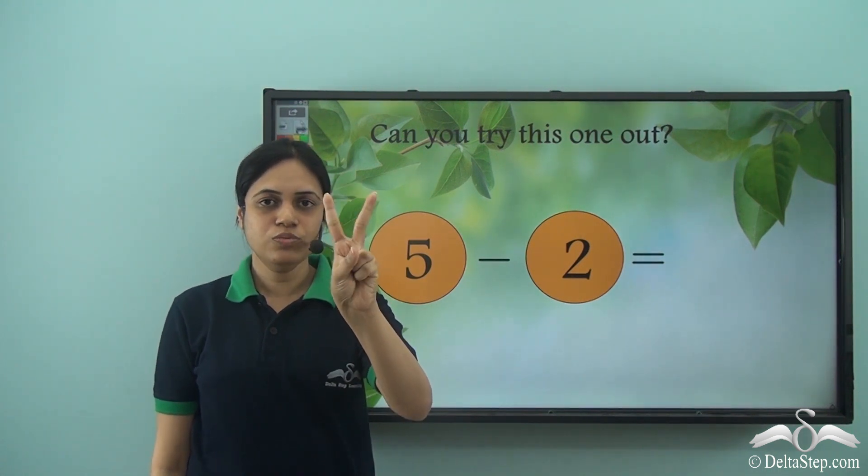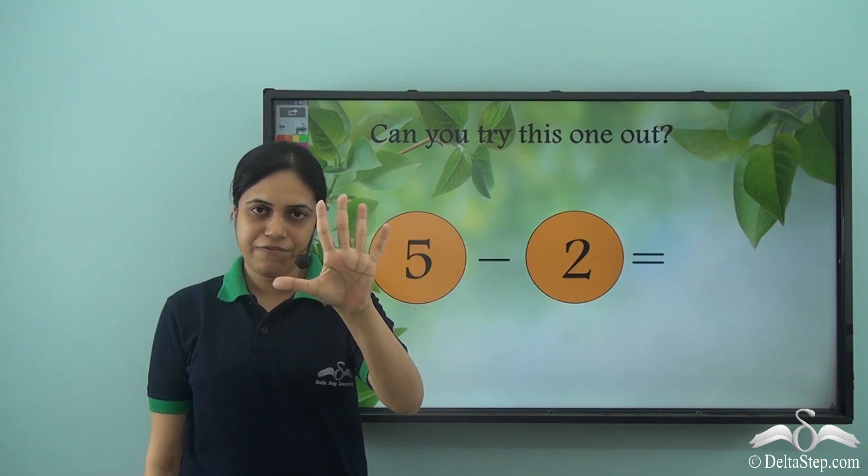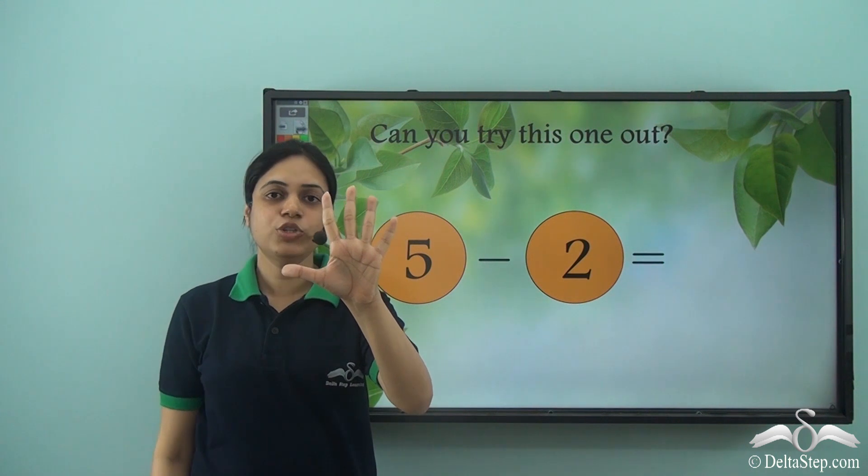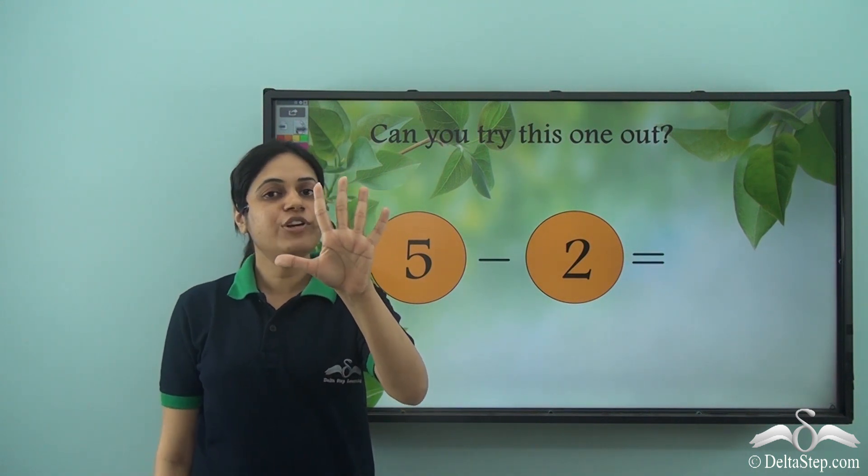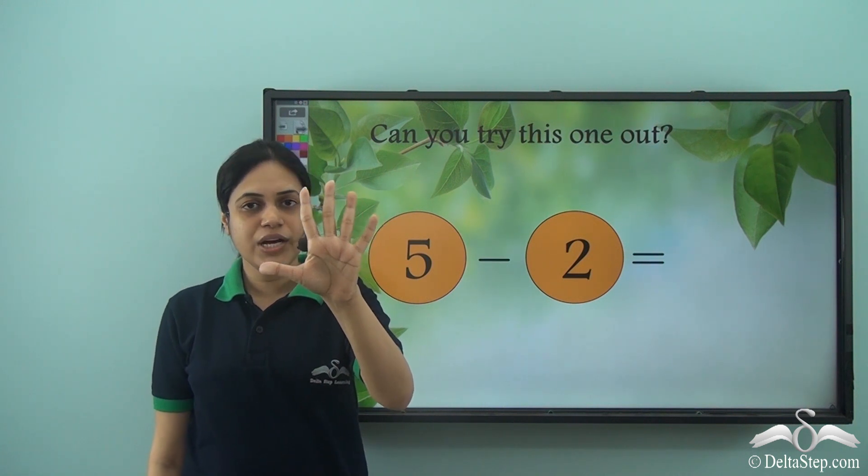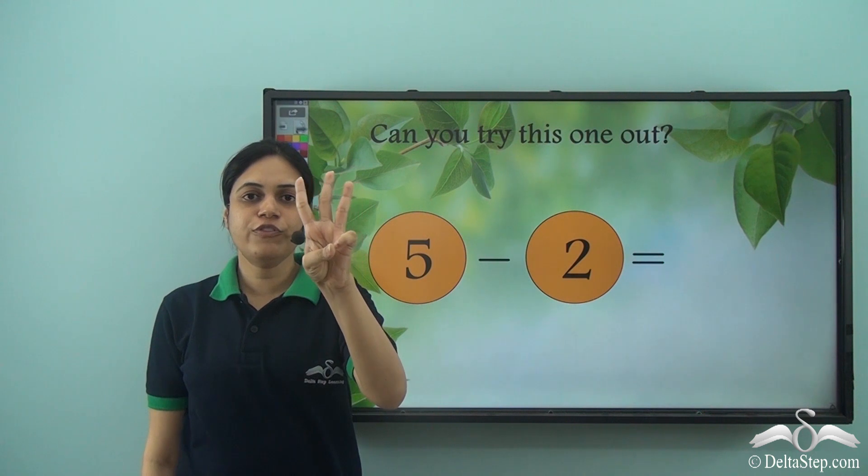One, two, three, four, five fingers. And what do I need to subtract? Two. So I will remove or take away two fingers. So let me do that. One, two. I remove two fingers.